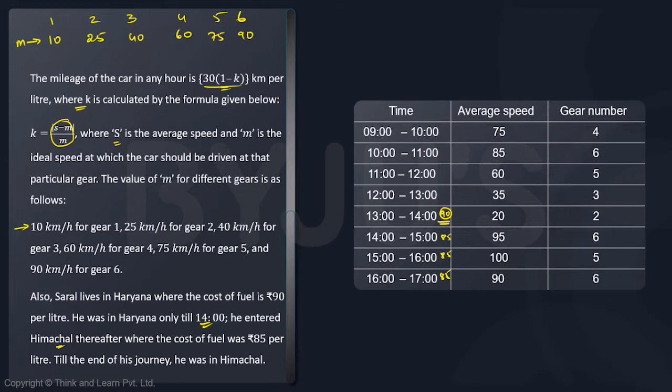For me to get the mileage first, I need my k value. So if I look at the k value for 9 to 10, my k value is given as |s - m| / m. Now s is 75. So k will be |75 - 60| / 60. At gear number 4, m is 60. So this is 15 by 60 which is 1 by 4. So my k is 1 by 4. So my mileage will be 30(1 - 1/4), which is 30 × 3/4. So this is 90 by 4, the mileage is 22.5.